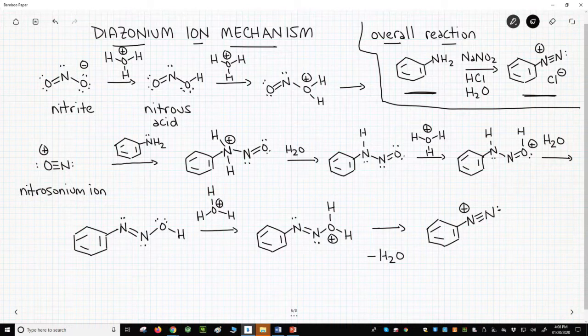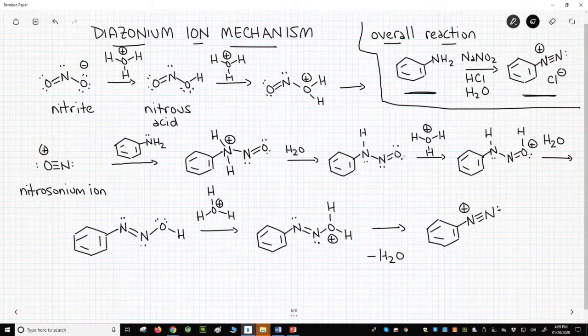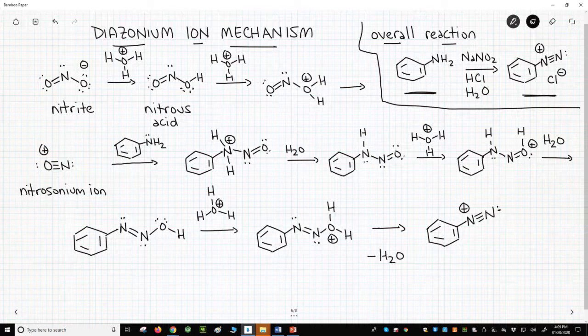Note that if a diazonium ion has a positive charge, then there will be a counter ion to balance the charge. In this case, the counter ion is chloride. People often omit the counter ion when drawing diazonium ions.